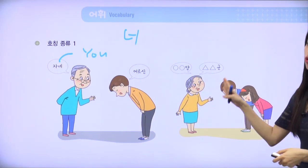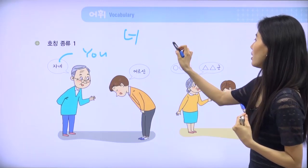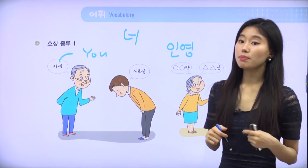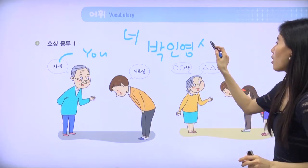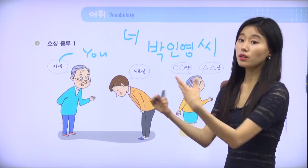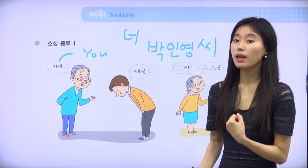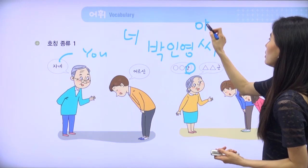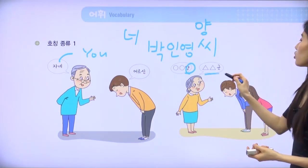Next we have 양 and 군. Let's say my name is Inyoung — my full name is 박인영. 박인영 씨 is of course correct — 씨 is a general honorific way to address someone. But 양 is for female, so it's a little more casual than 씨. For example, Inyoung 양.